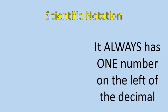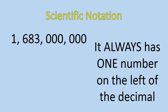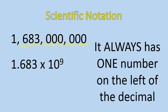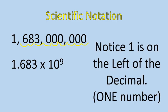Let's do one more. Scientific notation always has one number on the left of the decimal. So even if it's a huge, large number, it's going to have one number. I'm going to start at the end and count my way back — that decimal is going to move nine places to give me 1.683 times 10 to the power of 9. That is written in scientific notation. Notice 1 is on the left of the decimal. Otherwise, it's exactly the same as powers of 10.